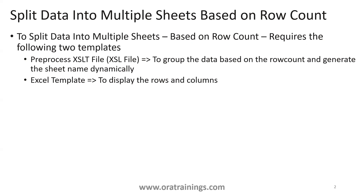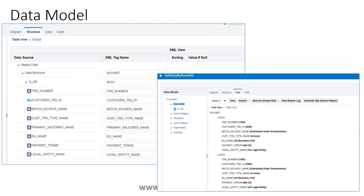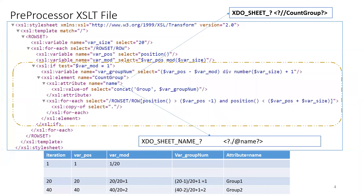There are a set of prerequisites — certain rules we have to follow to get the desired output. The first important thing is the data model. Generally when you design a data model, the top-level data structure will be data_ds. For our logic, make sure you change the data structure top-level tag to 'row set' and the group tag to 'row'. This is the first thing.